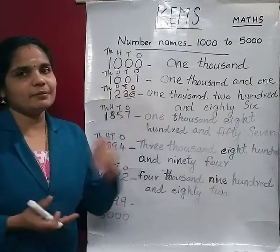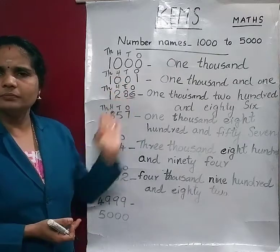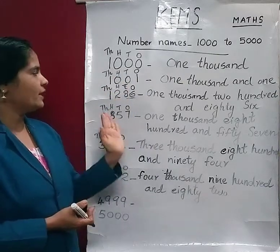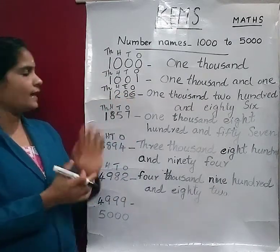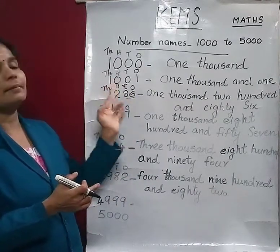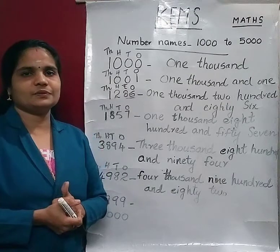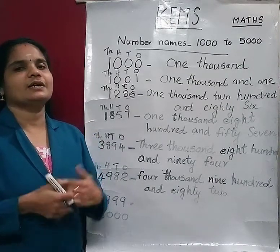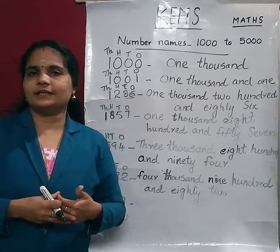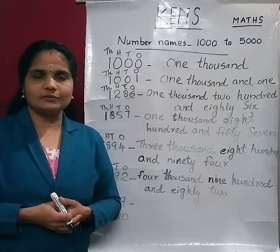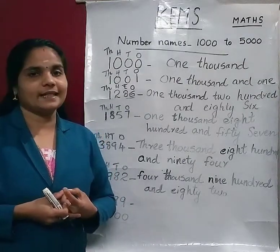So children, if any number we write, you can read this number in this form. First, we know the place values, and we read these numbers using the place values. So children, all of you write the numbers and number names in your book. Okay, so today we will stop here. Thank you.